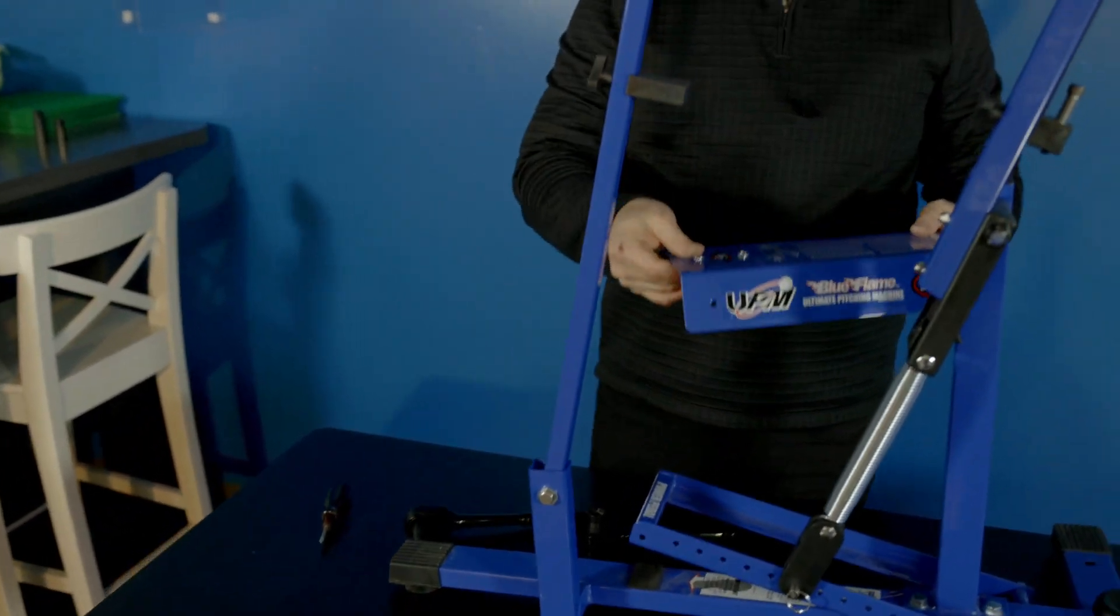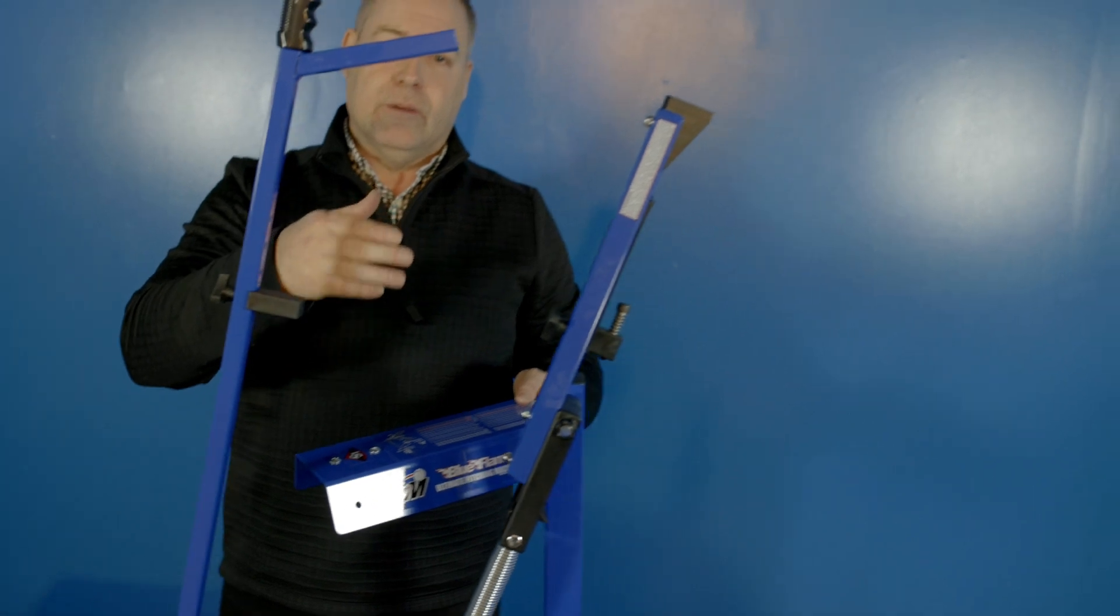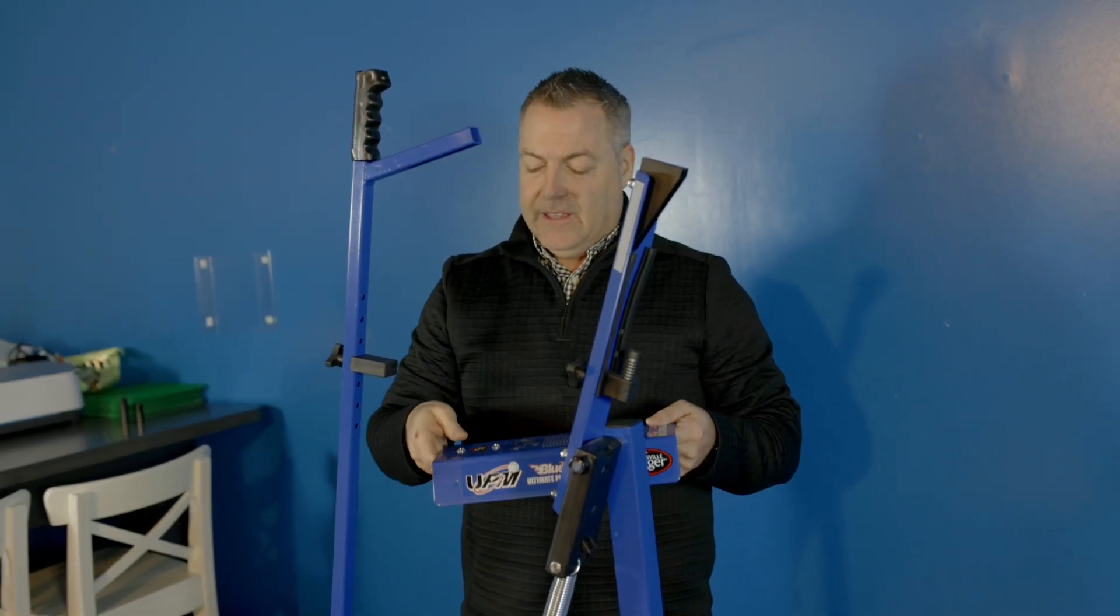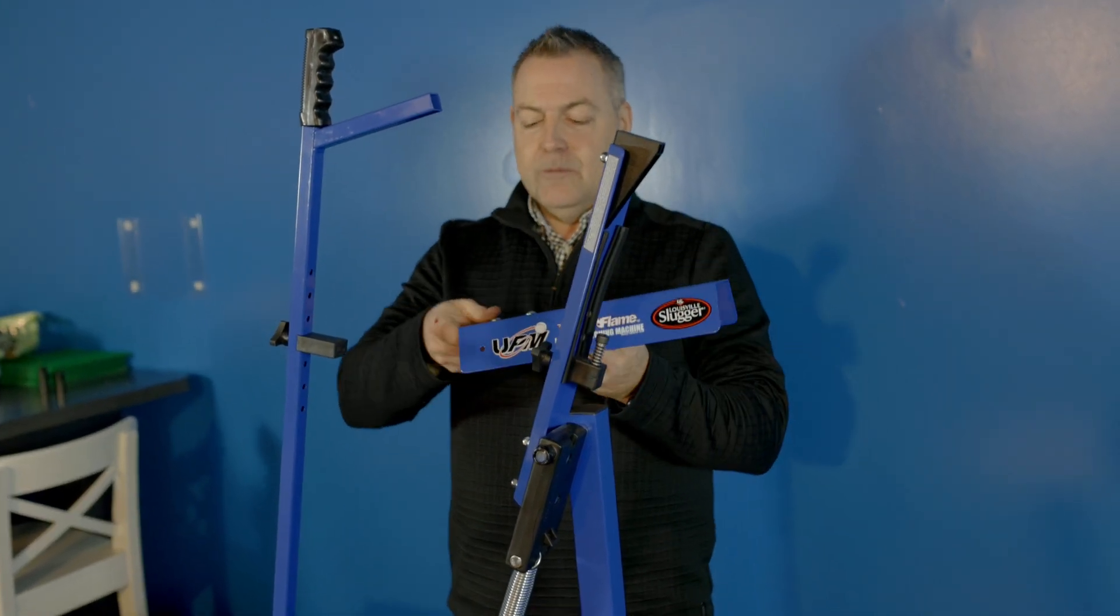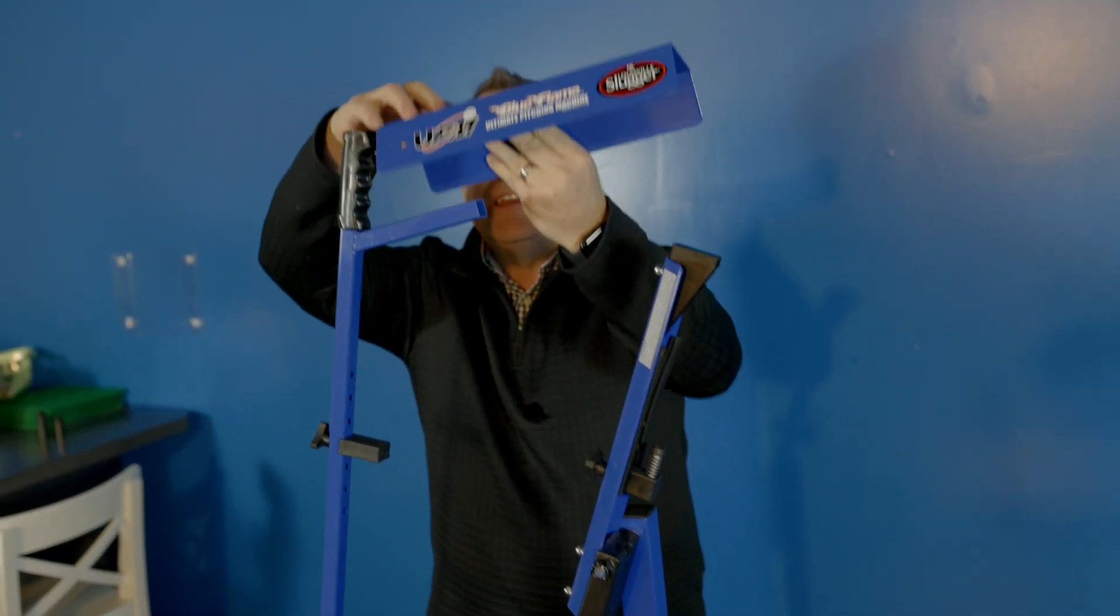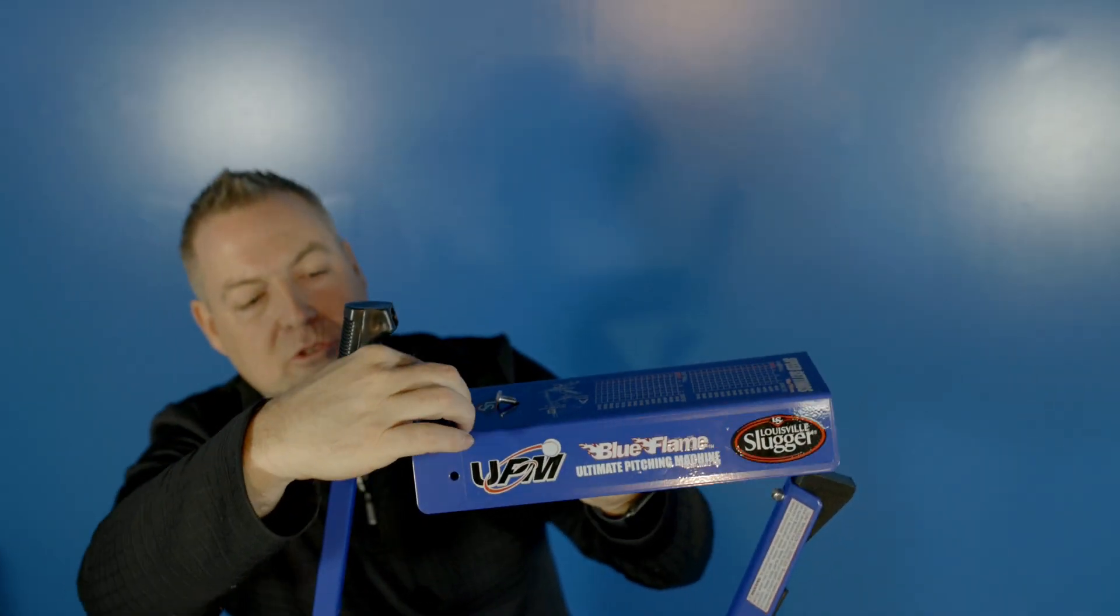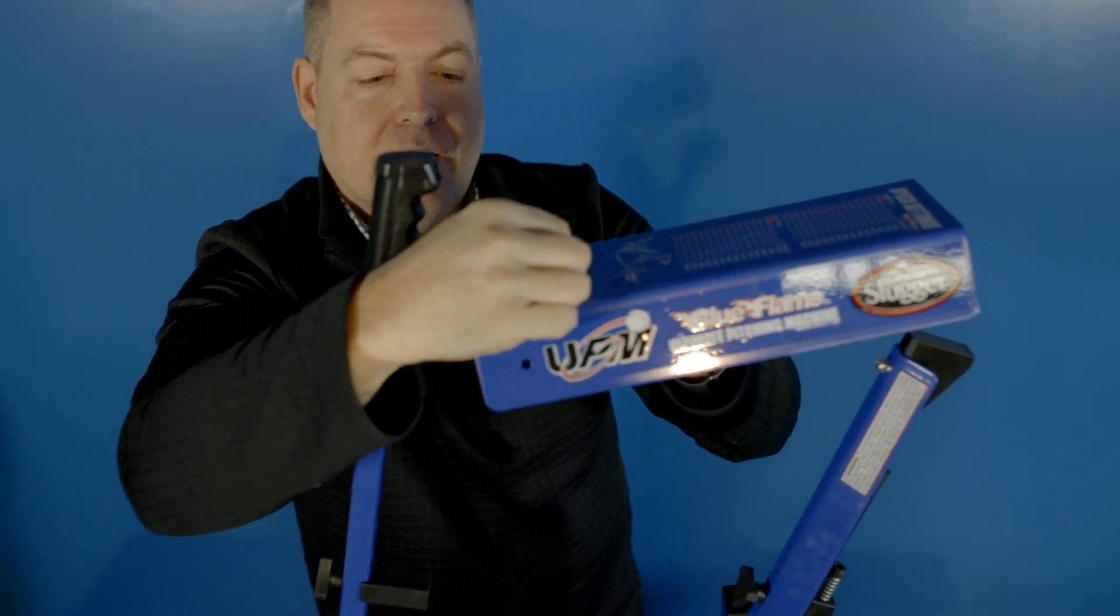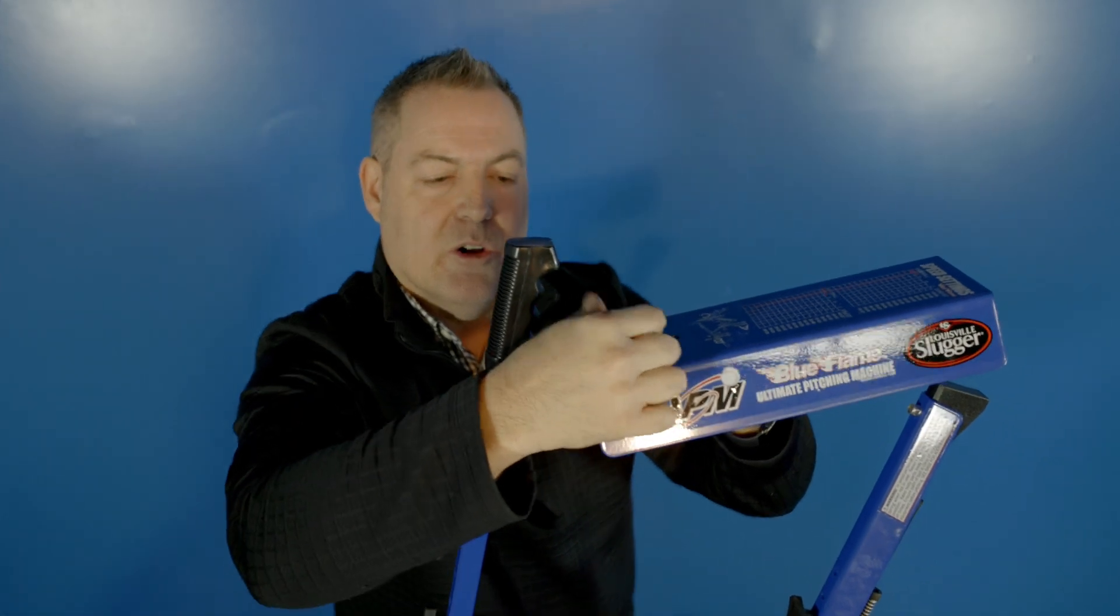And now the last step is the ball shield. The ball shield is to protect the user from the ball or any things to do with throwing the system. So the ball shield basically drops in on the top of the unit. There's some screws on the throwing arm. I'm just going to drop it in there and I'm going to hand tighten the screws just to hold it.